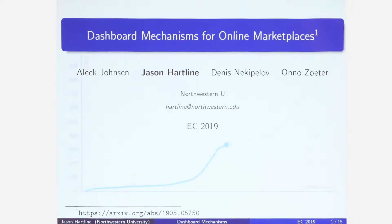I want to think about generally how we might design mechanisms for online marketplaces. Here are some basic assumptions. In these marketplaces, I have short-lived users that are matched with long-lived agents. These agents are like the advertisers in ad auctions, like the hotels on Booking.com, like the sellers on eBay. The users are the other side of the market.